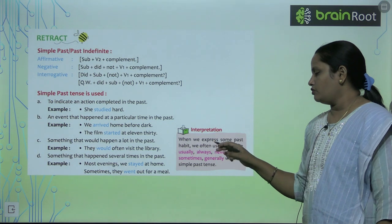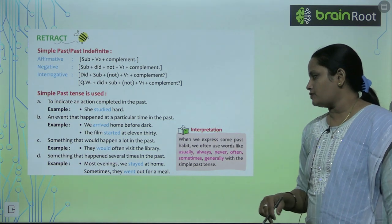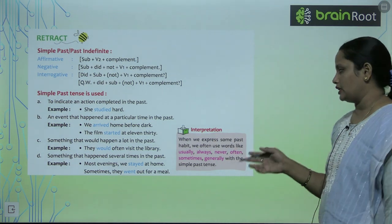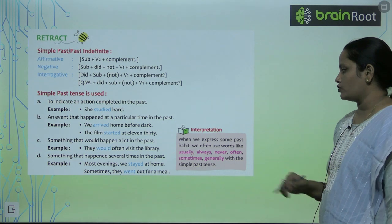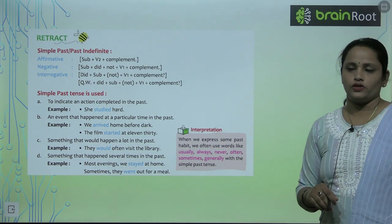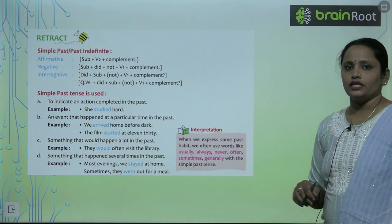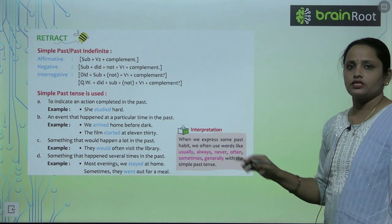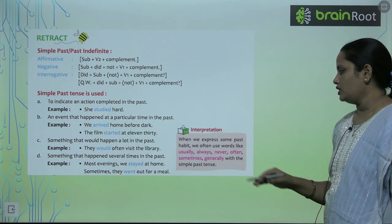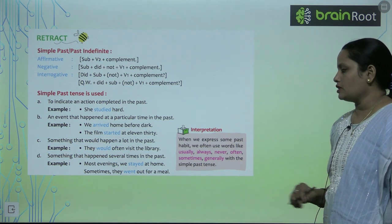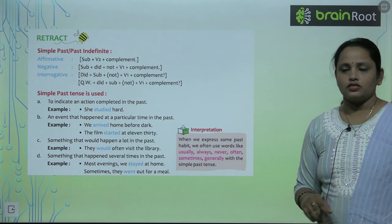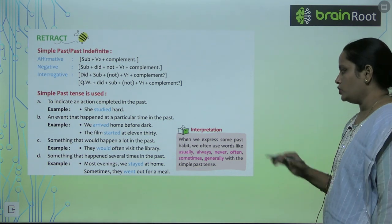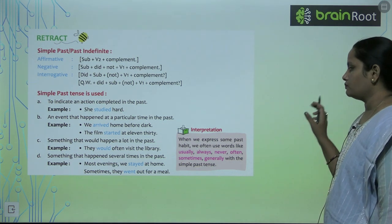When we express a past habit, we often use words like 'usually', 'always', 'never', 'often', 'sometimes', and 'generally' with the simple past tense. These words are commonly used alongside the simple past tense.